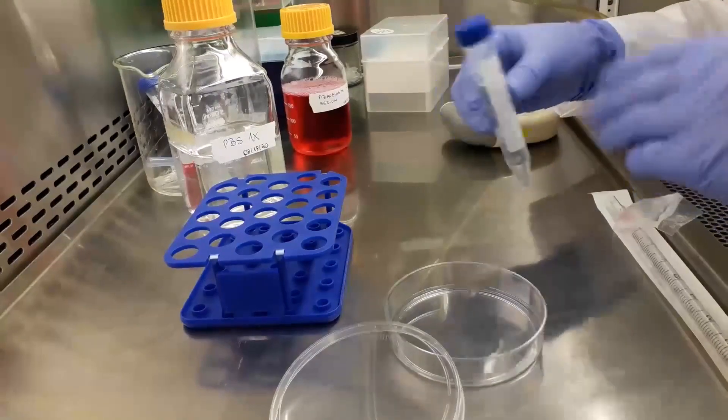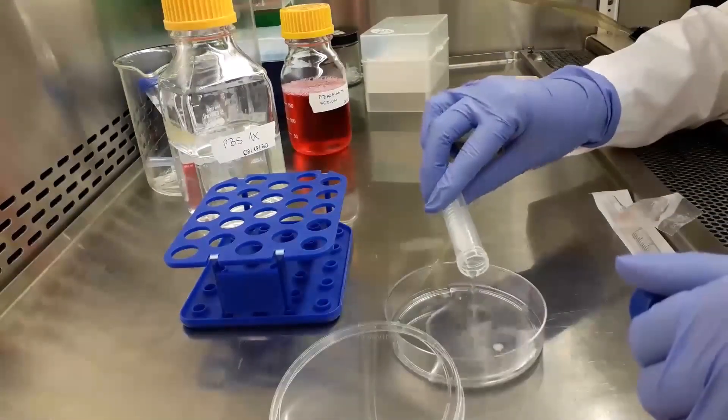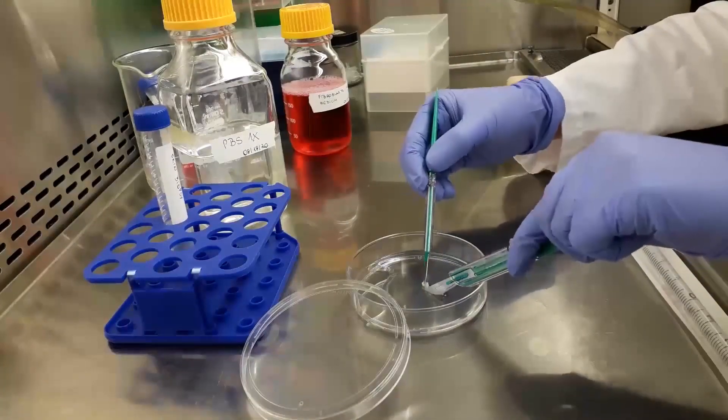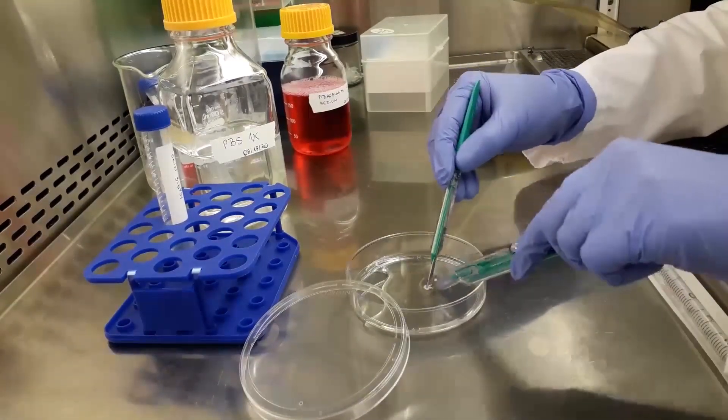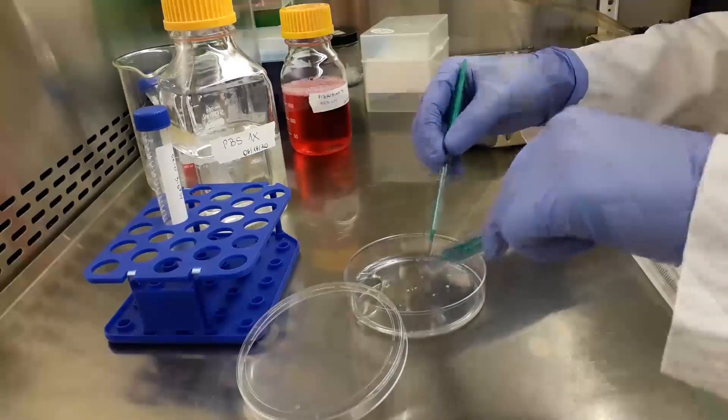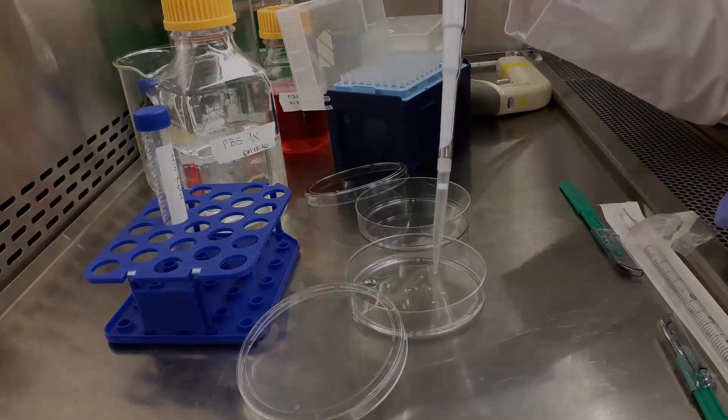Pour out the PBS and the skin biopsy onto a 10-centimeter-squared dish. Using sterile scalpels, cut the biopsy into pieces that are as small as possible. Using a pipette, transfer an individual skin piece onto a sterile 10-centimeter-squared dish.